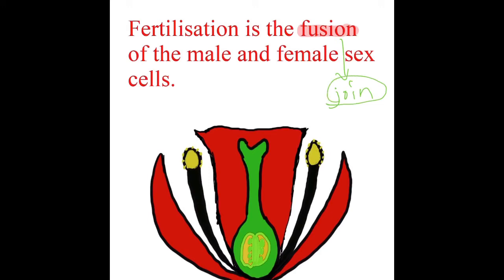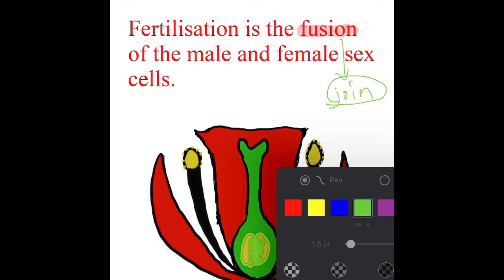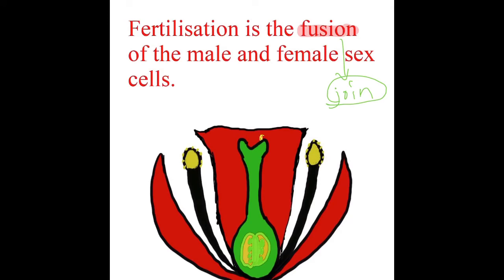What happens is that when the pollen lands onto the stigma, it will send out a pollen tube right into the ovary and into the ovules. So the male sex cells will travel down through this pollen tube and fuse with the ovules.